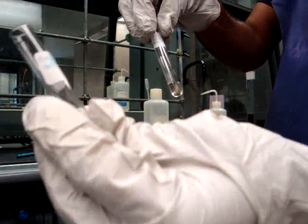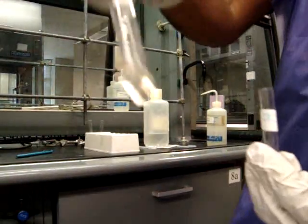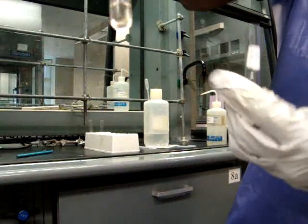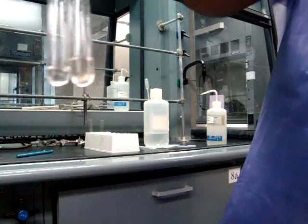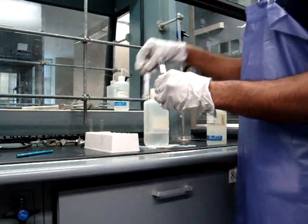You will then remove the bottom layer, sulfuric acid layer, into another test tube. After you've removed the sulfuric acid layer, you will label both tubes so that you know which tube is which.